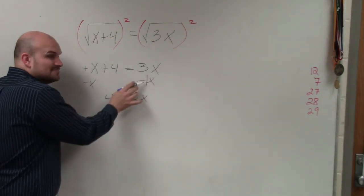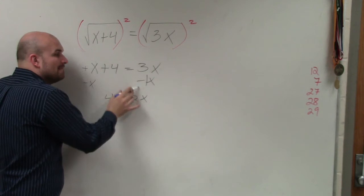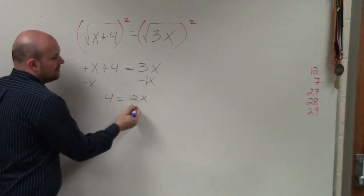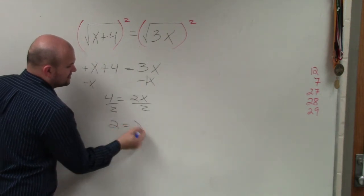Remember, this is being multiplied by negative 1. So you have 3x minus 1x, which equals 2x. OK? Then you can go ahead and solve. So you have 4 equals 2x, so 2 equals x.